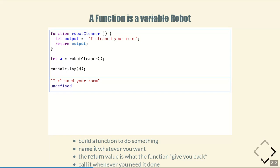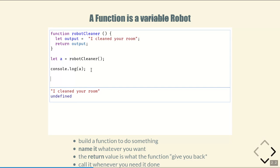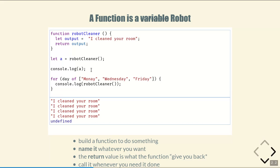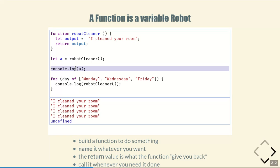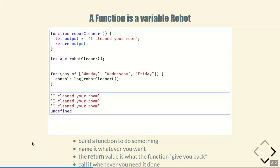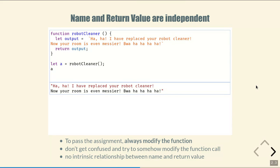We can name the function whatever we want and the return value is going to be what we get back. The reason we make a function is because I'm going to want to clean my room more than once — for instance, every Monday, Wednesday, and Friday. I can loop through an array of those days and for every day run the robot cleaner function, so my room gets cleaned three times. Whenever you need a function run, you call it by typing its name and then parentheses — usually with the parameter inside.